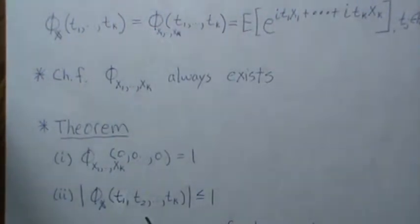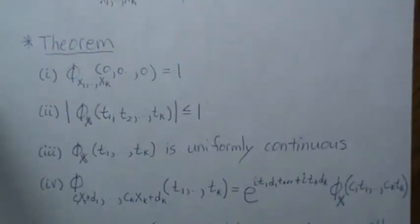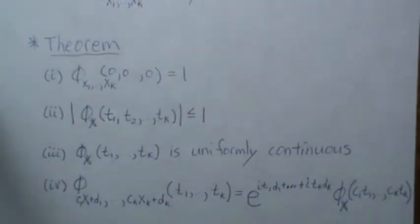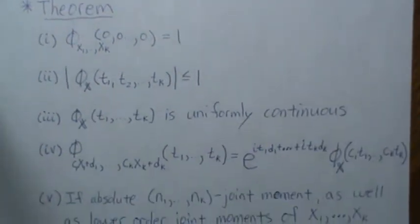The modulus of the joint characteristic function is less than or equal to one. It is uniformly continuous. And when you're taking transformations of random variables, so C1 X1 X1 plus D1, all the way up to CK times XK plus DK, can be rewritten in terms of the original X, where it's multiplied by this constant, and it's I T1, D1 plus I TK, DK. And here, it's C1 T1, CK TK. So this is very similar to the univariate characteristic function.